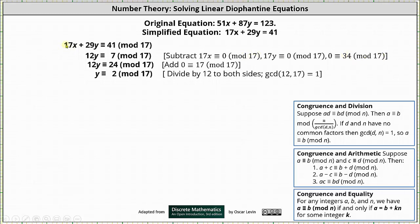So subtracting 17x from 17x gives us 0x. The x term drops out. 29y minus 17y is 12y. 41 minus 34 is 7. We now have the simplified congruence 12y ≡ 7 (mod 17).